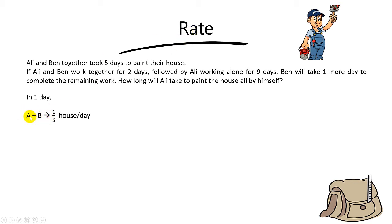You can recall why it's rate, right? Rate means how fast they do their work. So the rate for Ali plus the rate for Ben will be close to 1 out of 5 house per day.